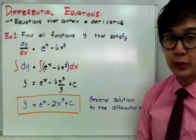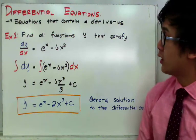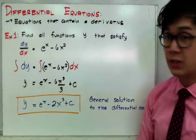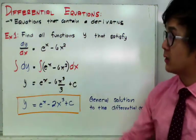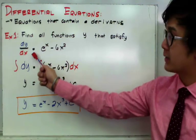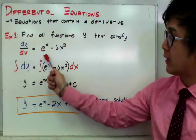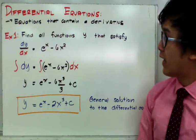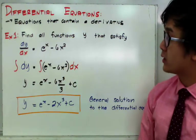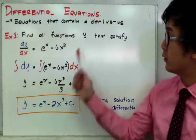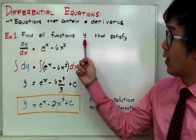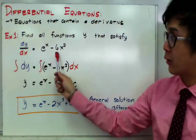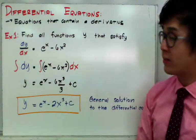In our first example, let's find all functions y such that it satisfies the differential equation dy/dx = e^x minus 6x squared. To find the original function y, we need to take the integral of both sides of our equation.